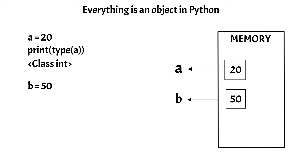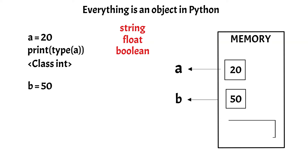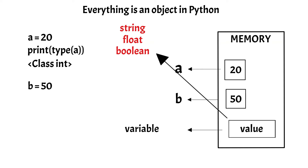Similarly, you can store values in variables with other data types — for example, string, float, boolean, etc. But always remember that the memory will be allocated to the value based on the data type object, and it will be later referenced to the variable name.